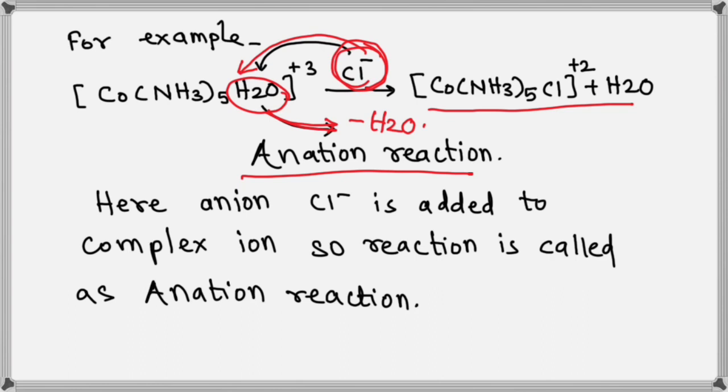So, addition of chloride or bromide or iodide or any negatively charged species (anion) with the removal of water is called as an anation reaction.